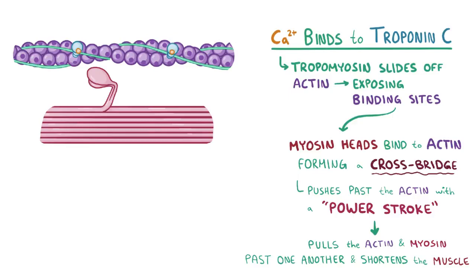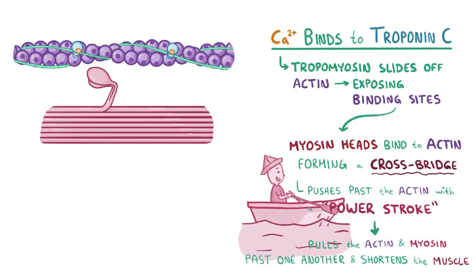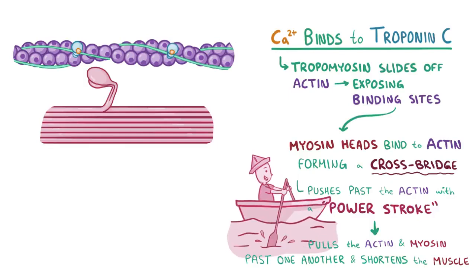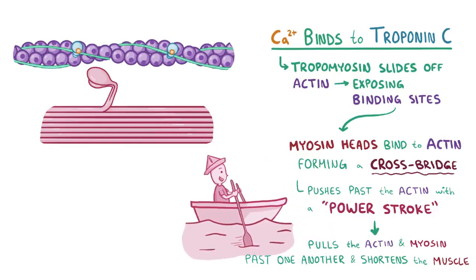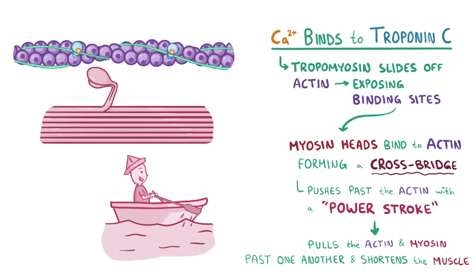The myosin head looks kind of like an oar in a boat. It hits the water, shifts, then comes out, and this only works in the presence of calcium ions.